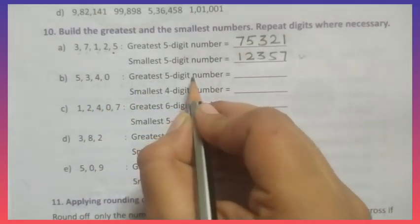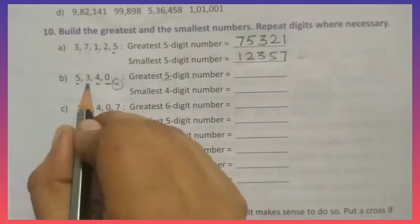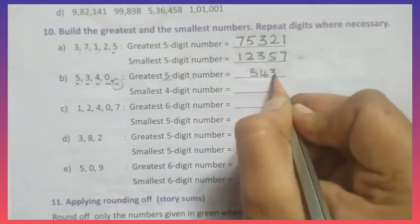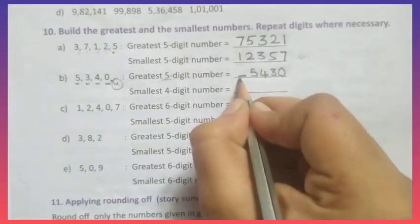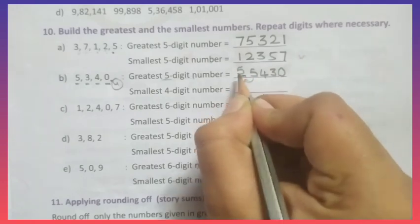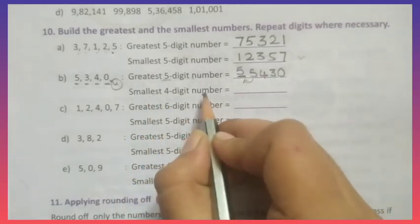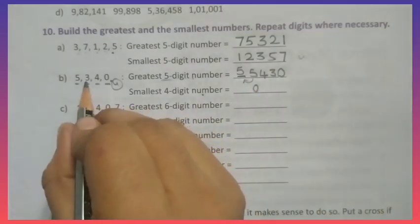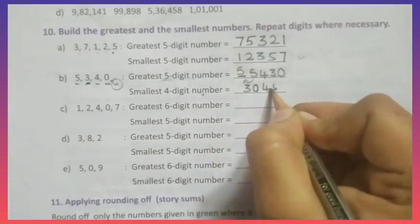Now, greatest 5-digit number — but only 4 digits are given. Arrange from big to small: 5, 4, 3, 0. That gives 4 digits, but we need 5. So we repeat the greatest digit. The greatest number becomes 55,430. For the smallest 5-digit number, arrange small to big: 0 would come first, but we should not write 0 first. So use the next digit, 3, first: 3, 0, 4, 5 — giving 30,45.